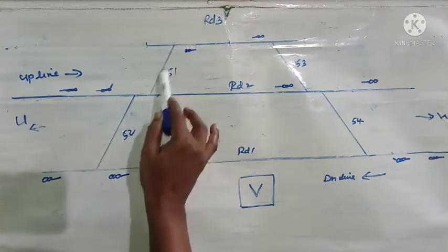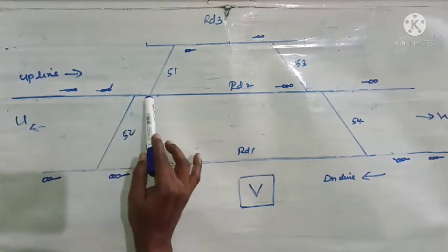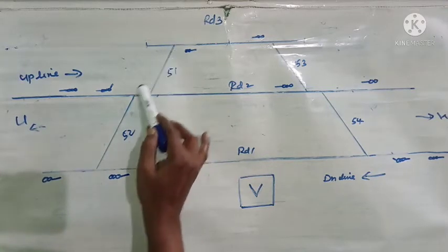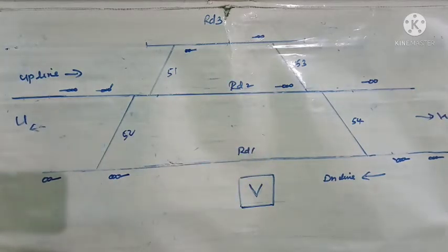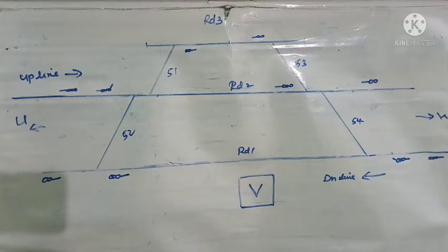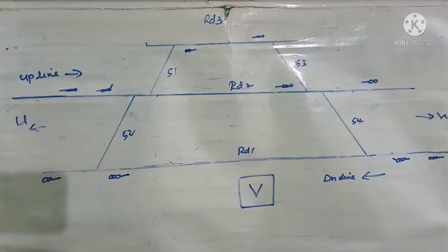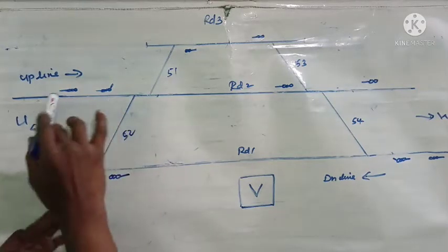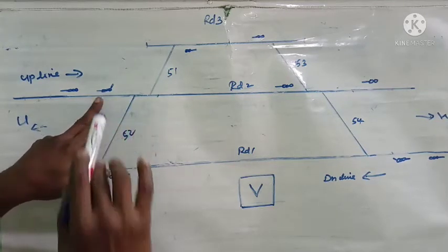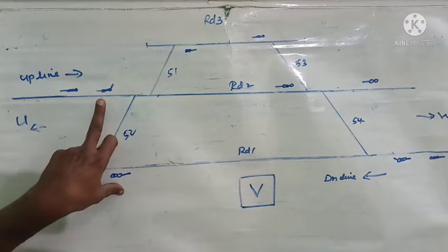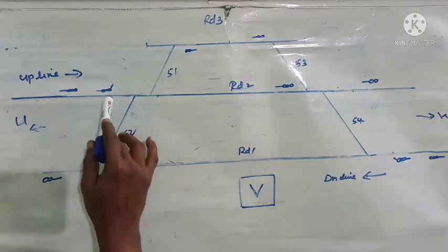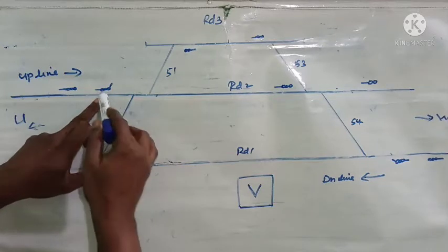He has to wait for some time, then alter this point — which is currently set for main line — to set it for loop line. Then the home signal should be taken off for road 3. But can this be done? Once a signal is taken off for a train, it should not be put back to ON unless there is an emergency. Emergency is defined as a condition where there is a chance of an accident. Here there is no case of an accident, so he cannot put back the signal.